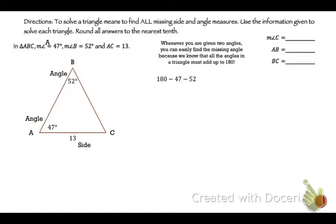So that's going to be 180 minus 47 minus 52, which gets you 81. So C is 81. We just solved for one of our missing pieces that we're supposed to solve for. And then we did it in an easy way, right?